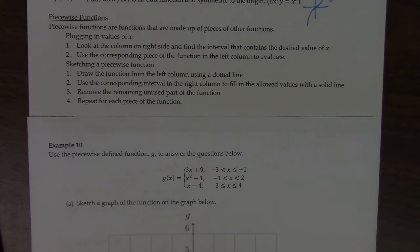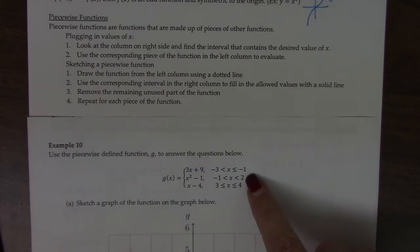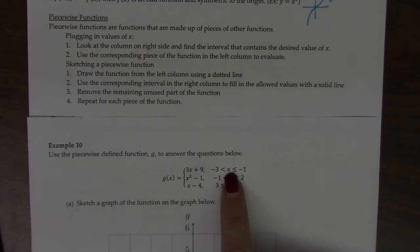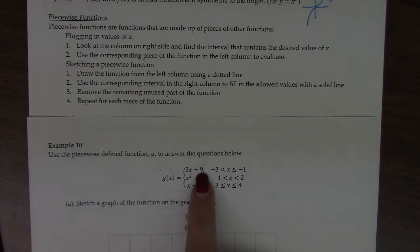So if I want to know what g of negative 2 is, you start in the right column and find out which one of these intervals includes negative 2. I can see for this one, it's right here. Then you go across the row to the corresponding equation, and that's where you plug negative 2 into.